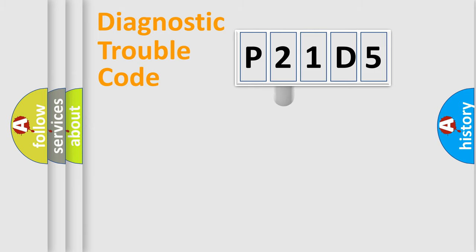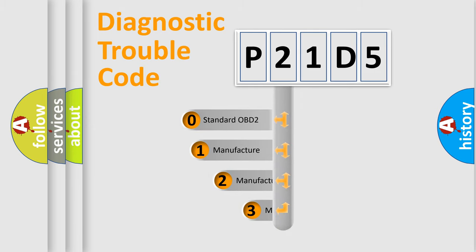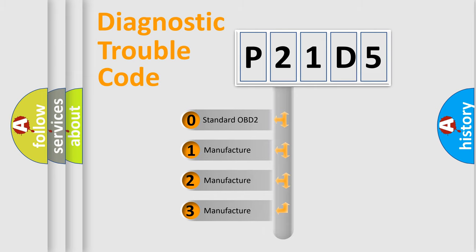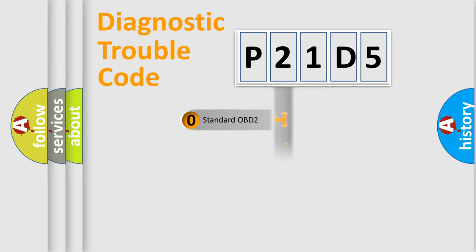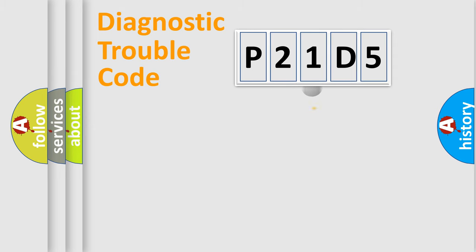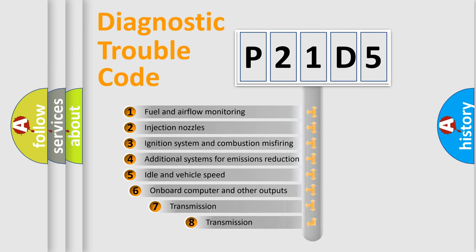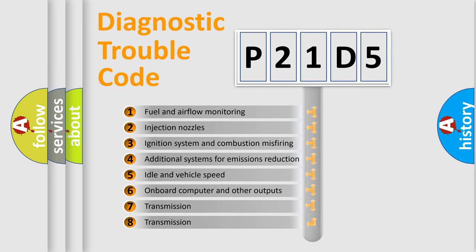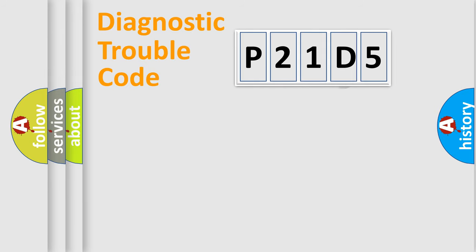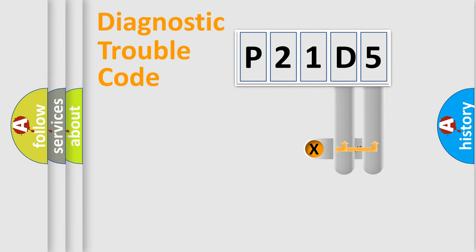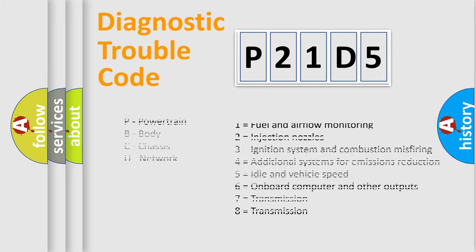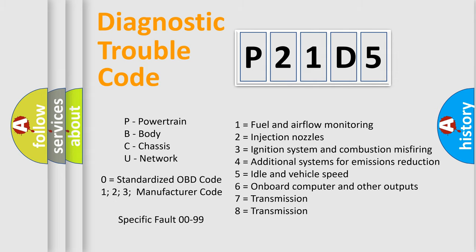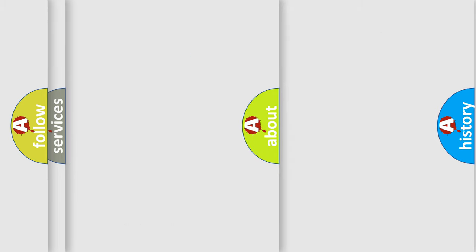This distribution is defined in the first character of the code. If the second character is expressed as zero, it is a standardized error. In the case of numbers 1, 2, or 3, it is a more specific expression of a car-specific error. The third character specifies a subset of errors, and this distribution is valid only for the standardized DTC code. Only the last two characters define the specific fault of the group. Such a division is valid only if the second character code is expressed by the number zero.